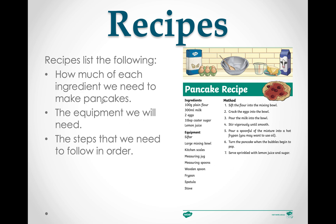We also use a list when making a recipe. A recipe shows us how much of each ingredient we need to make pancakes, the equipment we will need, and the steps we need to follow in order. Over here is the list of all the ingredients: flour, milk, eggs, sugar, lemon juice. Here it tells us what we will need to use — a bowl, some jugs, spoons. And here it tells us the steps we need to follow to make the yummy pancakes. This is how lists are used in recipes.